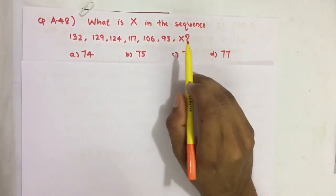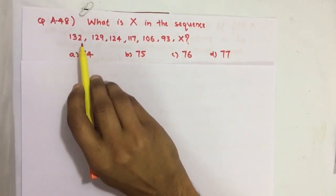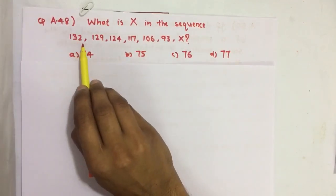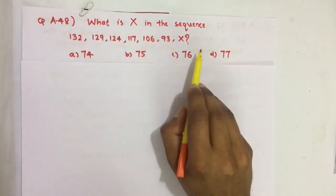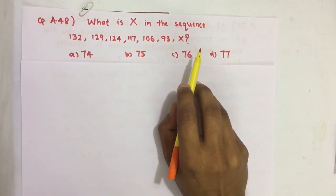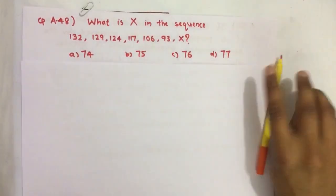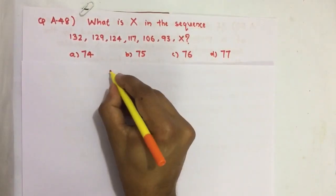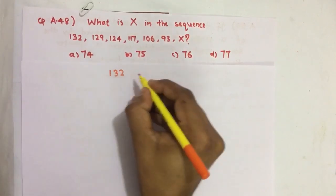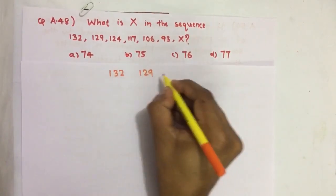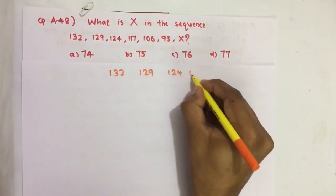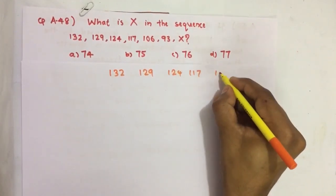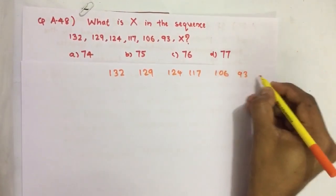We can see this is a decreasing series. From each number some quantity is decreasing, so let us find that decreasing number. Before that, let me rewrite this series here: 132, 129, 124, 117, 106, 93, then X.